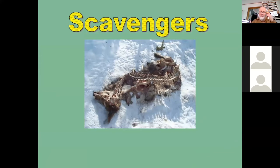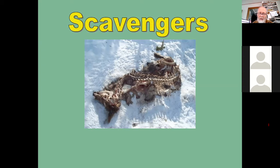Cats are also scavengers. In one situation west of Golden, Colorado, roadkill deer were placed and monitored. Over a year, 19 different cougars came to that site. The average time for a cougar to come in to the deer was five to seven days, and in one case it was 29 days after the deer was placed before a cat came to scavenge. Cats would rather prey on something fresh, but they won't turn down a free meal just because it's a little old.